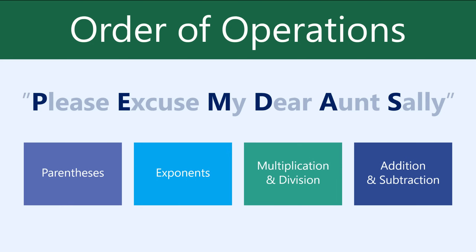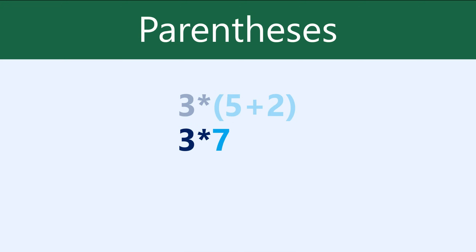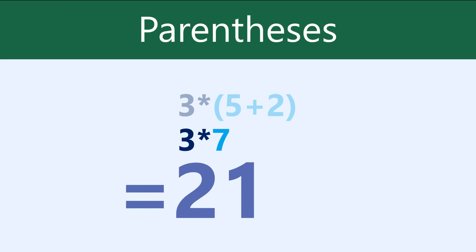Let's take a closer look at some examples. In this formula, 5 plus 2 is in parentheses, so we'll calculate that first to get 7, and then we can just multiply 3 times 7 to get 21.